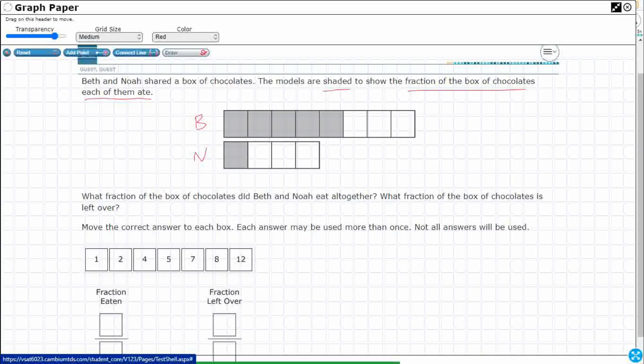So let's see what Beth ate. 1, 2, 3, 4, 5 out of 6, 7, 8. Okay, so Beth ate 5/8. Okay, Noah ate, and I'm going to put his over here, 1/4.